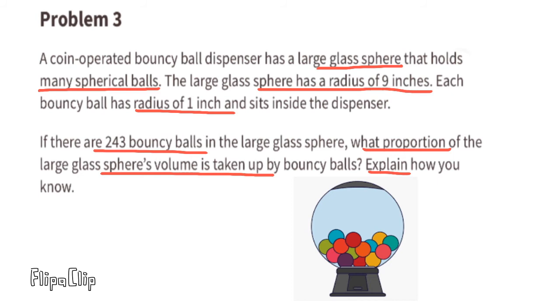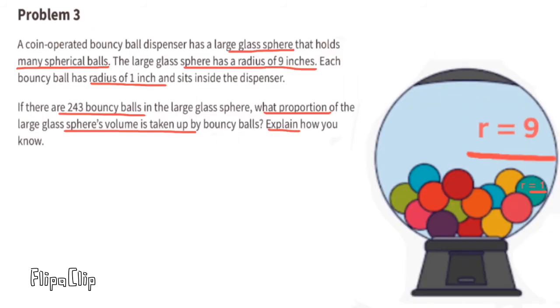Explain how you know. The radius of the large glass sphere is 9 inches, so we can substitute the r with a 9. And 9 times 9 times 9 equals 729. 3 goes into 3 once, and 3 goes into 729 243 times. 4 times 243 is 972, so the volume of this large glass sphere is 972 times pi.